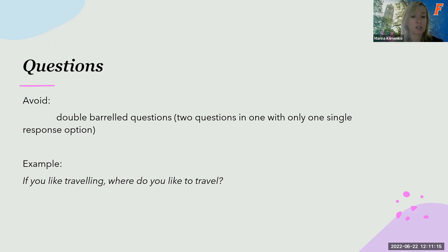Avoid double barreled questions. Those are questions that would have two questions in one but only one single response. For example, if you ask your subjects if you like traveling, where do you like to travel, you're lumping two questions in one: do you like traveling and where do you like to travel. But you only provide them with one type of answer. That is not a good question. It's a double barreled question.